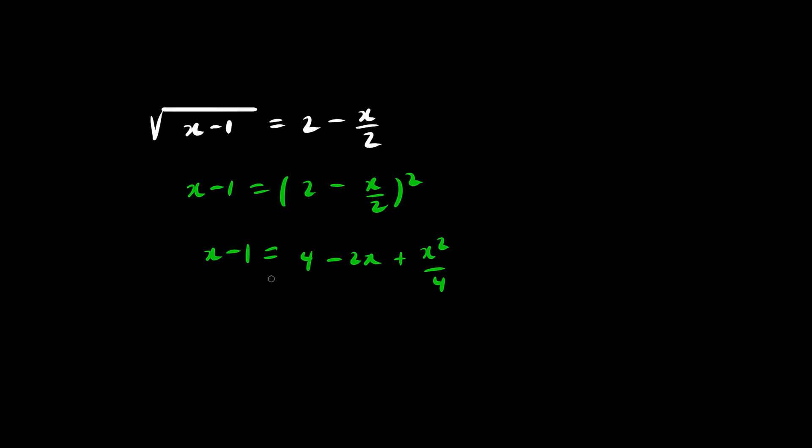Now we could do a variety of things, but why don't we just multiply both sides by 4 to get rid of this denominator.